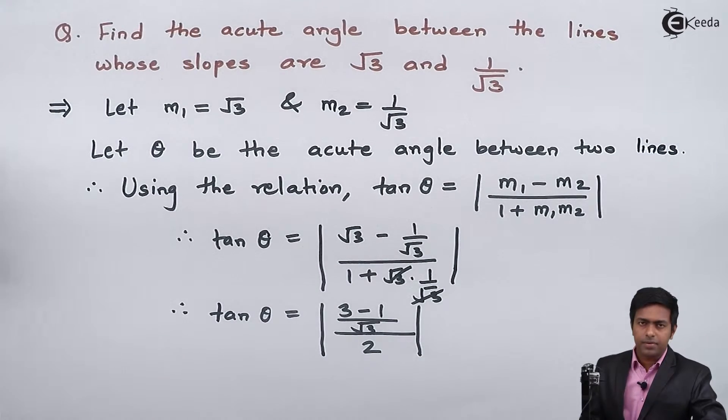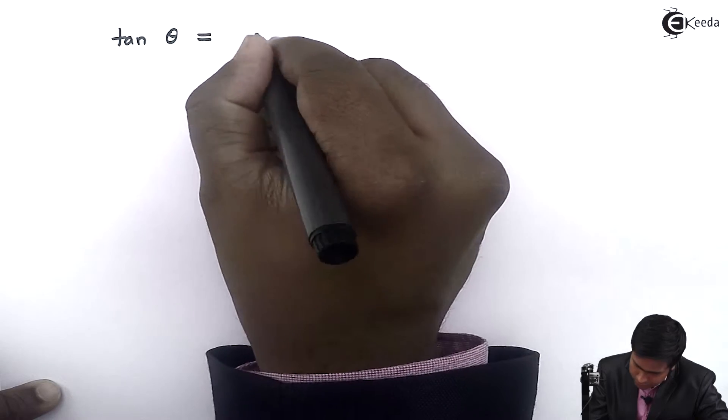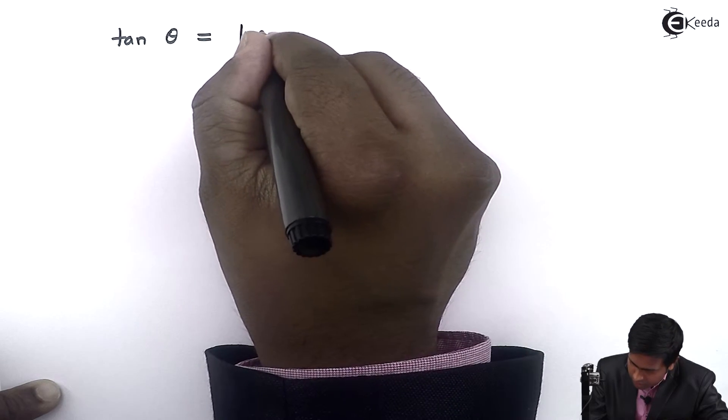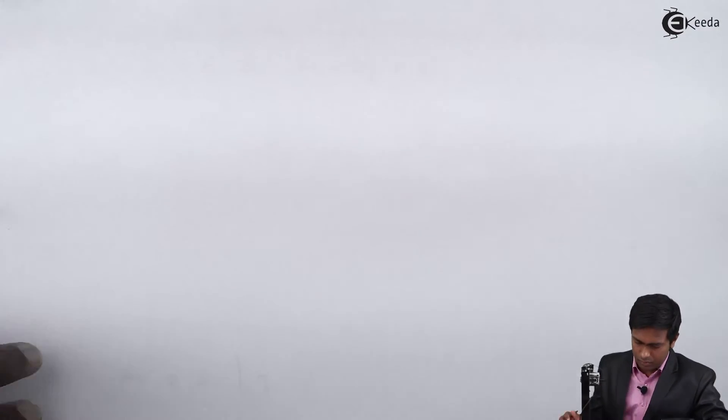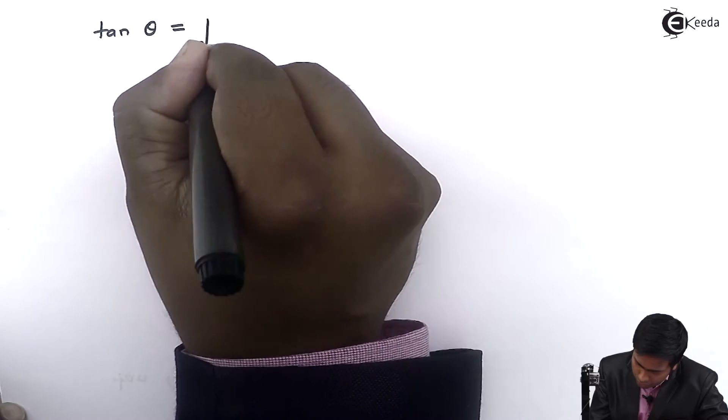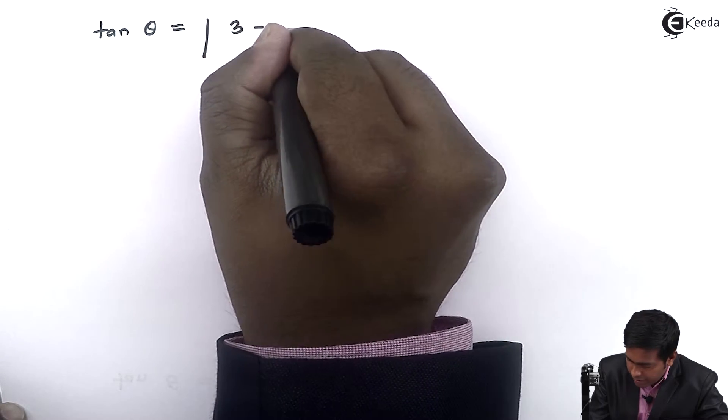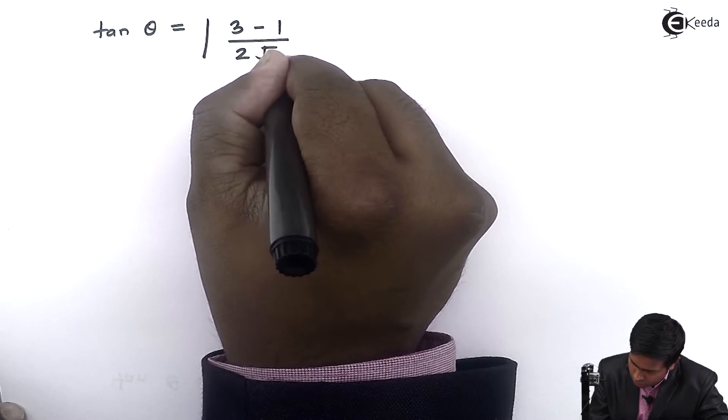Taking √3 to the denominator, we get tan θ = |(3 - 1) / (2√3)|.